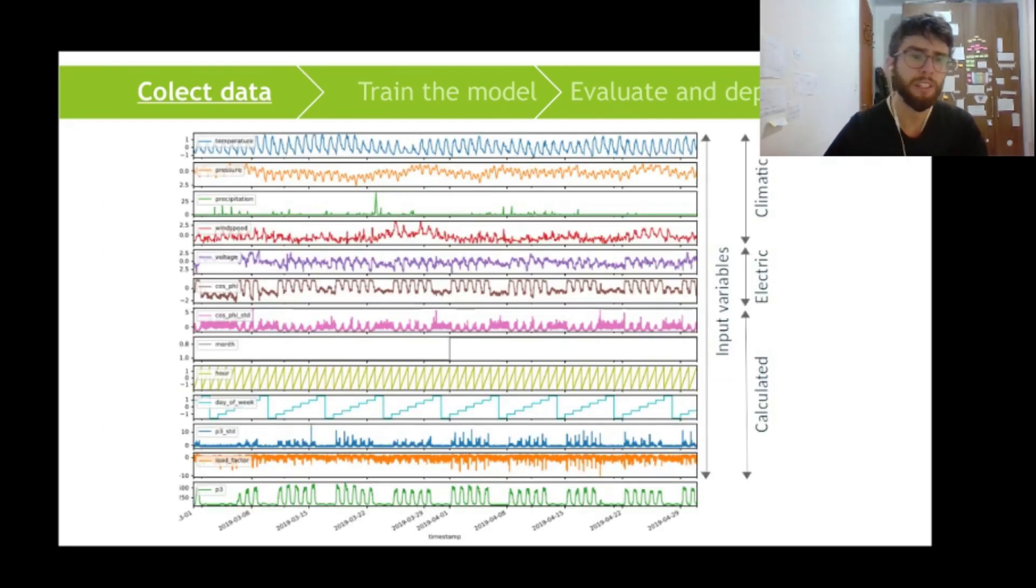And here we can see a time series of two months of this data. And we can see here that we have climatic variables: temperature, pressure, precipitation, and wind speed. We have electrical variables, so the voltage of the grid and the power factor.